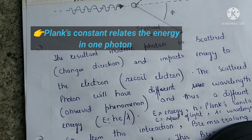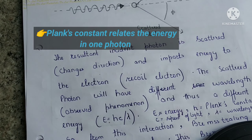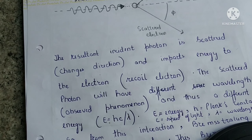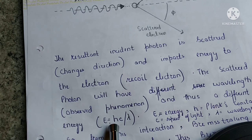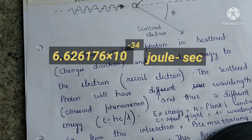Planck's constant relates the energy in one photon — that is, how much energy is in one photon as compared to the frequency of that photon. So we can say it is a physical constant denoted by h, equivalent to 6.626176 × 10⁻³⁴ joule-seconds.